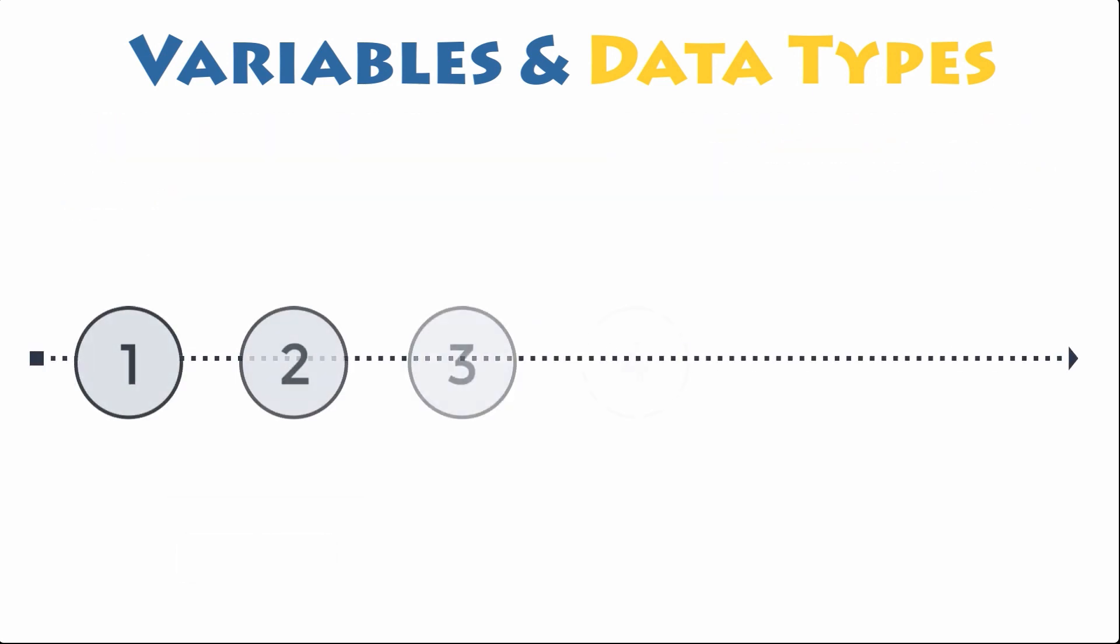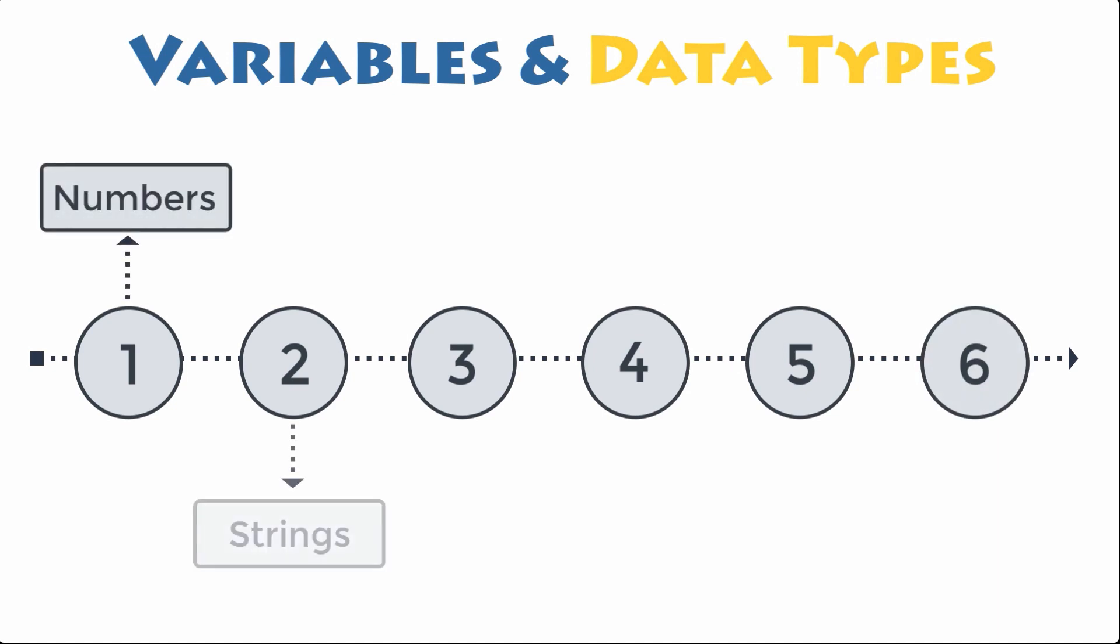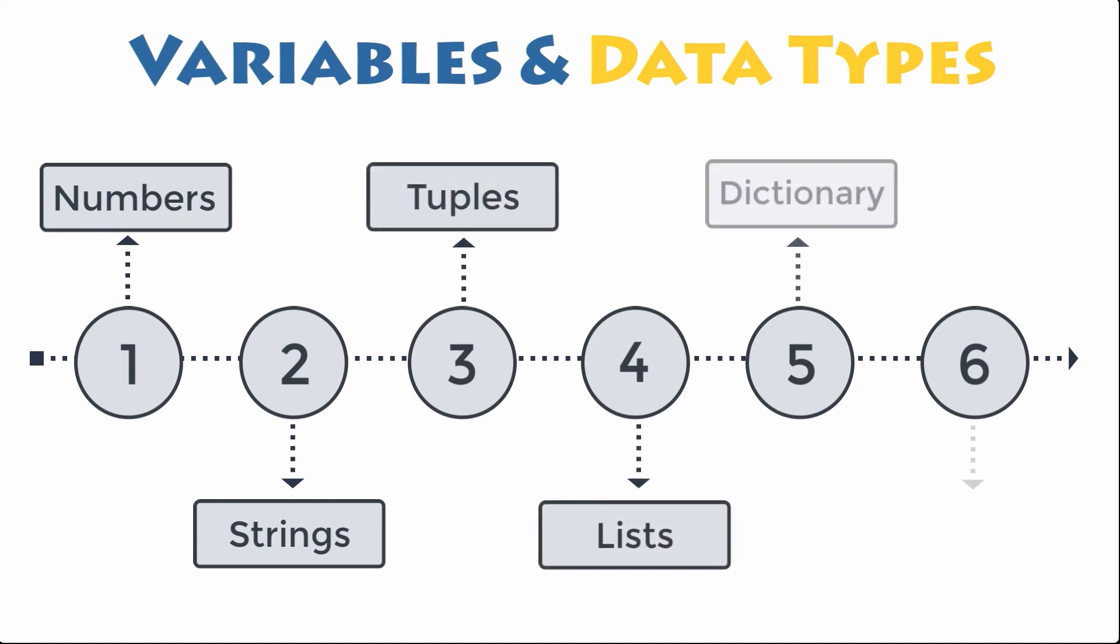There are multiple data types in Python. Some of the most basic data types built into Python are numeric, string, and boolean types. Others are part of the collections: tuples, lists, dictionaries, and sets.